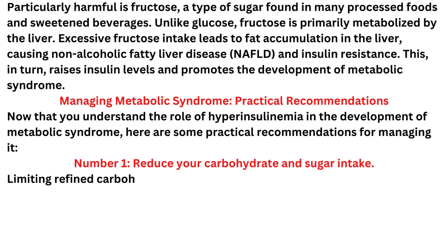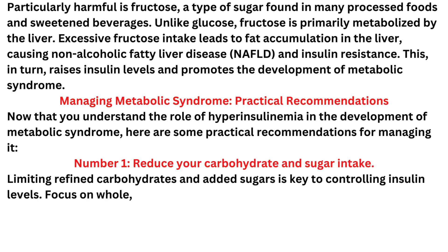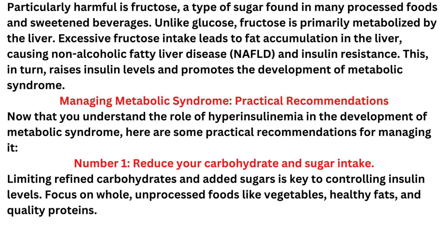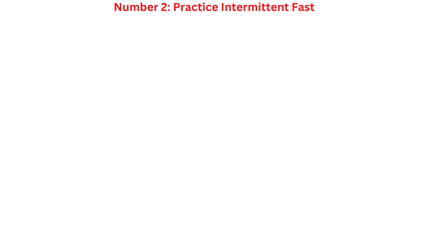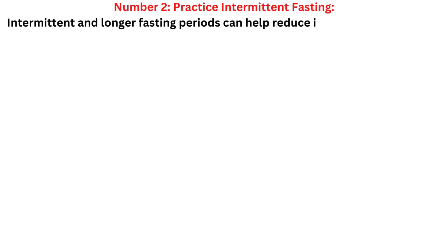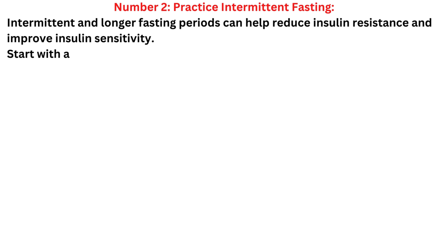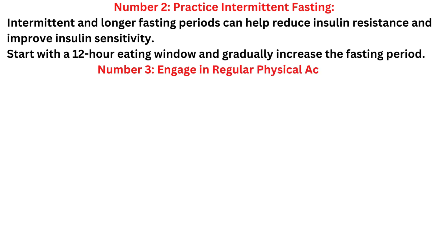Managing metabolic syndrome: practical recommendations. Now that you understand the role of hyperinsulinemia in the development of metabolic syndrome, here are some practical recommendations for managing it. Number 1: reduce your carbohydrate and sugar intake. Limiting refined carbohydrates and added sugars is key to controlling insulin levels. Focus on whole, unprocessed foods like vegetables, healthy fats, and quality proteins. Number 2: practice intermittent fasting. Intermittent and longer fasting periods can help reduce insulin resistance and improve insulin sensitivity. Start with a 12-hour eating window and gradually increase the fasting period.